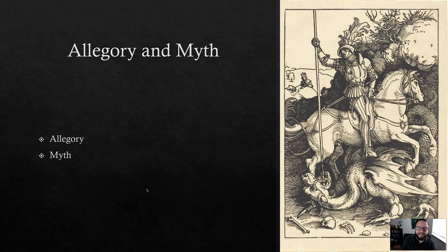Other types of figurative language are allegory and myth. Allegory is a complex network of symbols where we have two layers: the literal layer of what happens in a story, and the allegorical or symbolic layer that happens underneath that. There are a lot of one-to-one kind of comparisons here.